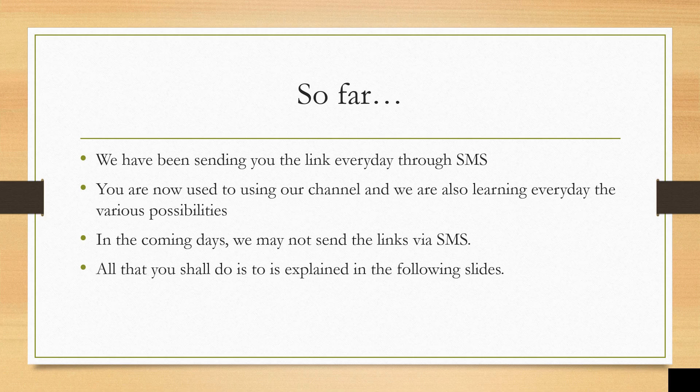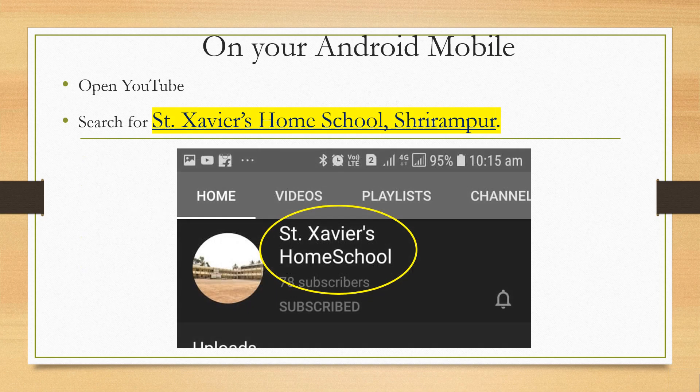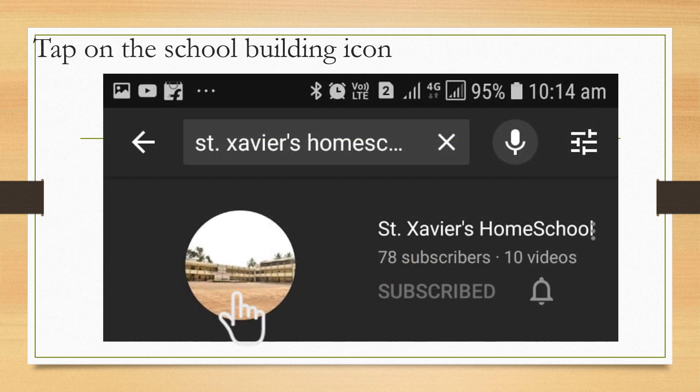So you can follow the steps I have explained in the following slides. If you are using an Android mobile for viewing our YouTube channel, first you open the YouTube app and then type on the search box: St. Xavier's Home School Srirampur, and then you will reach our channel having an icon like this. Then tap open the school building icon.